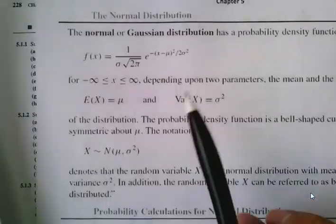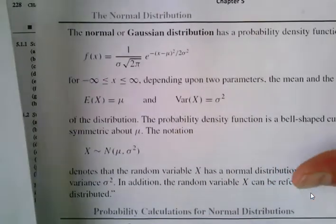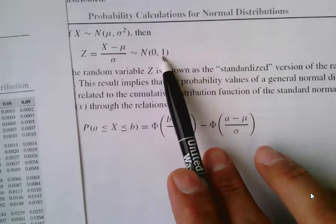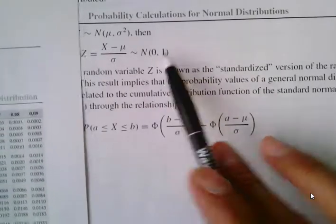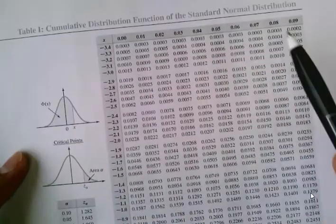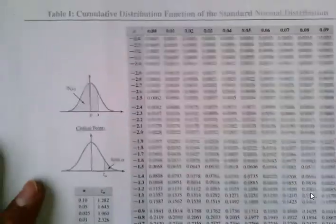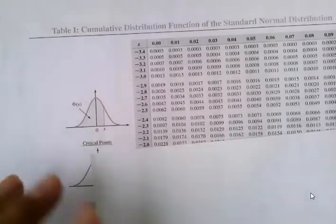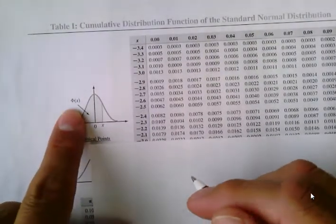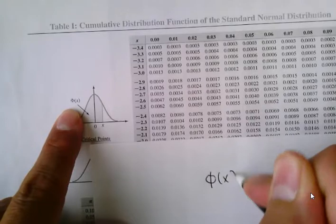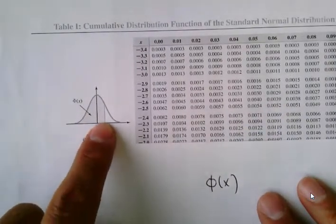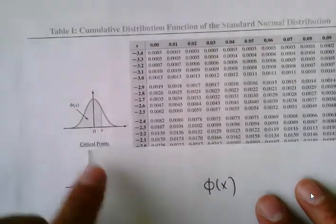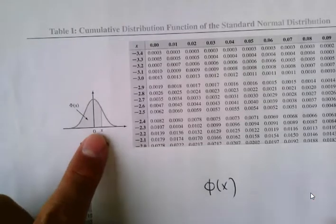Let's review this. This is the standard normal distribution when mu equals zero and variance equals one. We have some answers in this table. We use the symbol phi of x to indicate the area under the bell curve — the normal distribution, also called the bell curve — to the left.